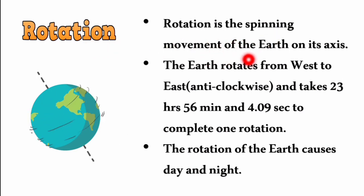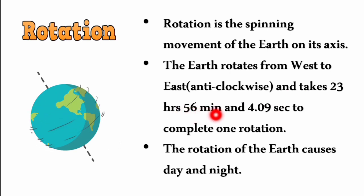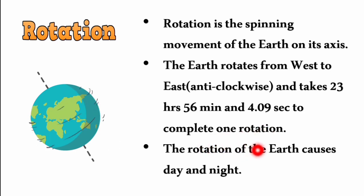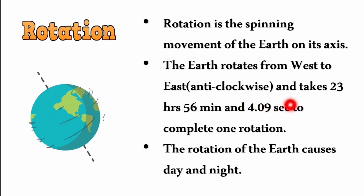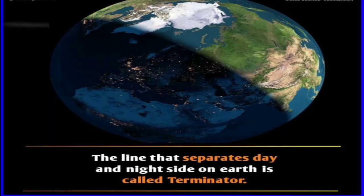Rotation is the spinning movement of the Earth on its own axis. The Earth rotates from west to east, in an anti-clockwise direction, and takes 23 hours, 56 minutes and 4.09 seconds to complete one rotation — that is one day. The rotation of the Earth causes day and night. The line that separates the day and night sides is called the terminator line.